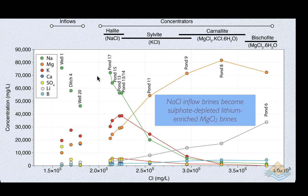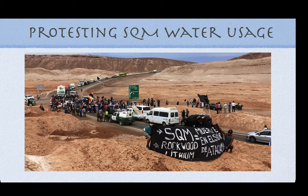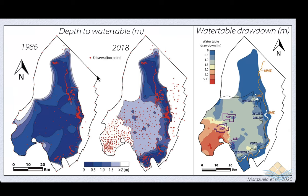By the bischofite stage or carnallite-bischofite stage, the system is basically a magnesium chloride brine — we are precipitating hydrated magnesium chloride salt and lithium levels are approaching concentrations suitable for extraction. We need water in this system, and that's a problem — pumping brines from the brine wells is creating problems with the natural groundwater system in this area, affecting the lives of the indigenous population living around Salar de Atacama and many other high-altitude salars in the Andes.